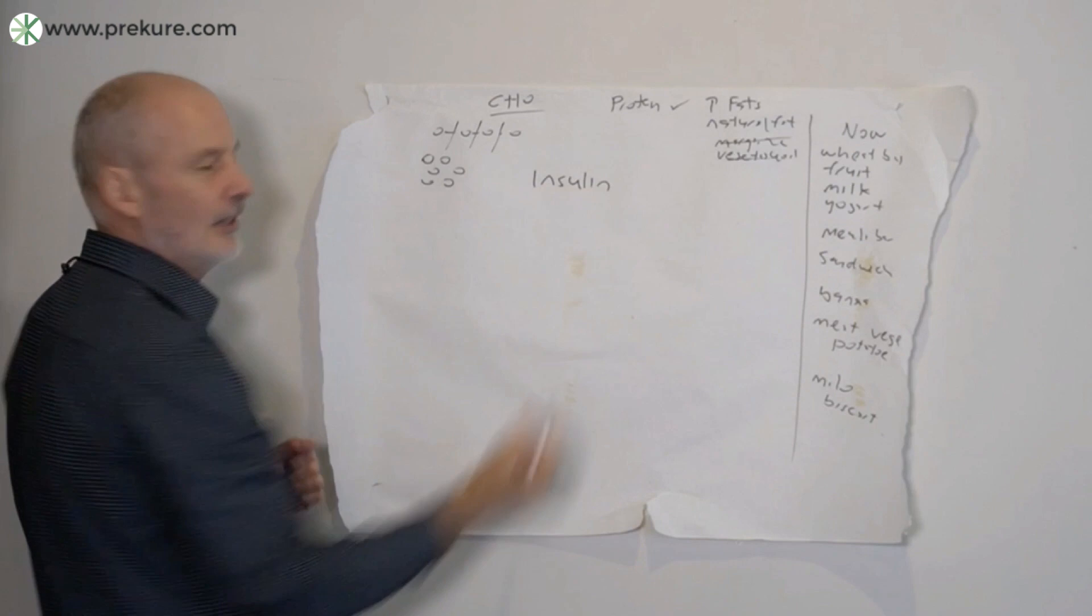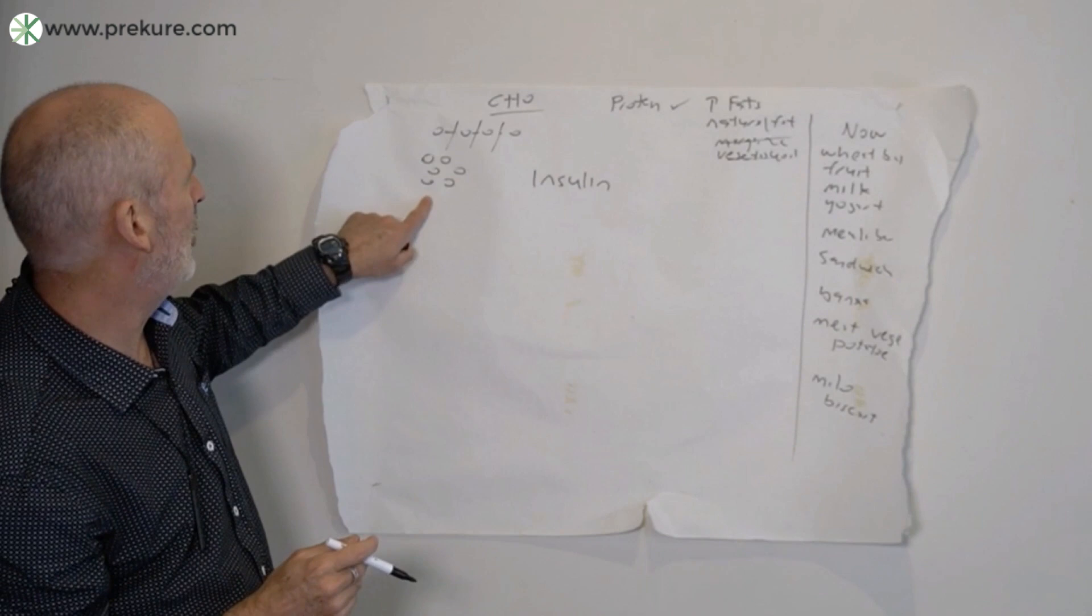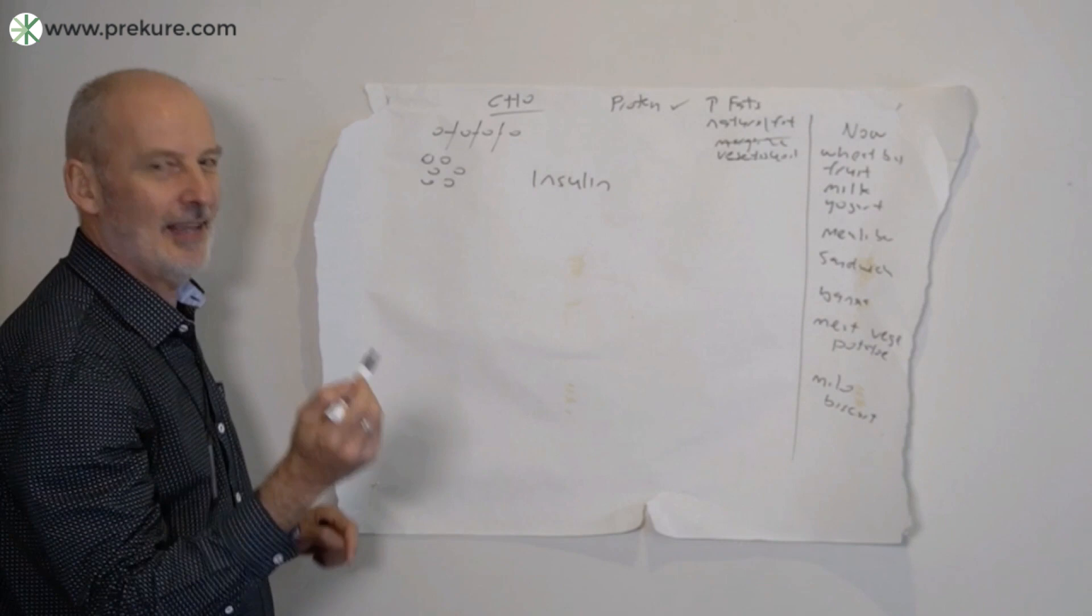And insulin. Insulin is the key. So insulin is the fat controller. Insulin is the key to understanding obesity and all these other chronic health conditions. So insulin is monitoring the amount of blood sugar, and the blood sugar gets there because of the carbohydrates we eat, and then the liver becomes involved.